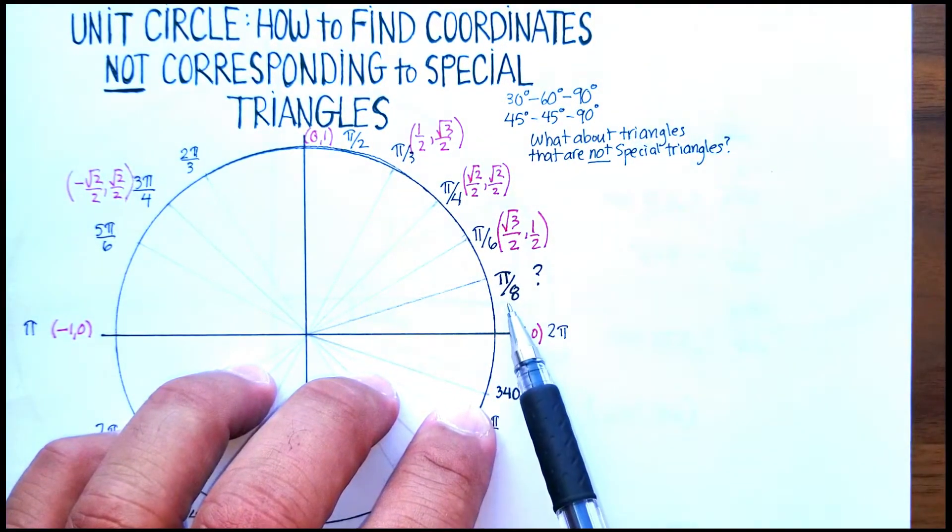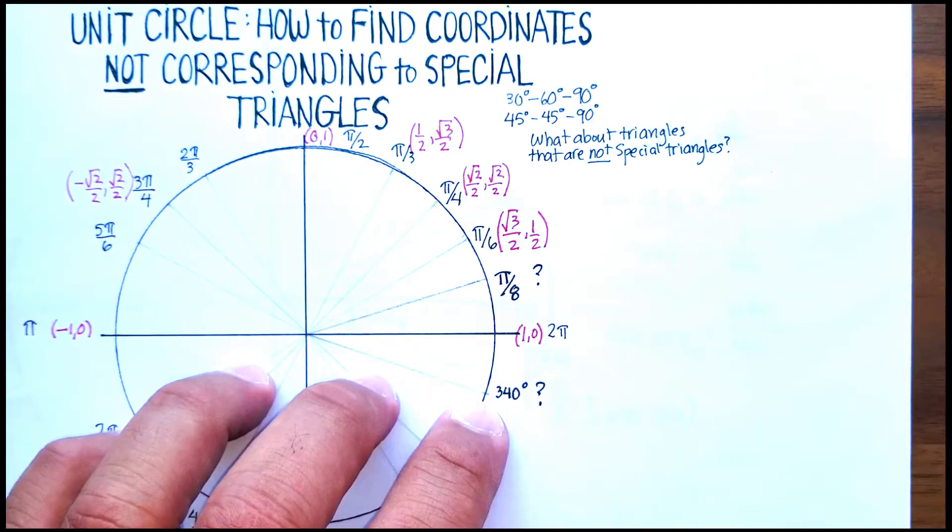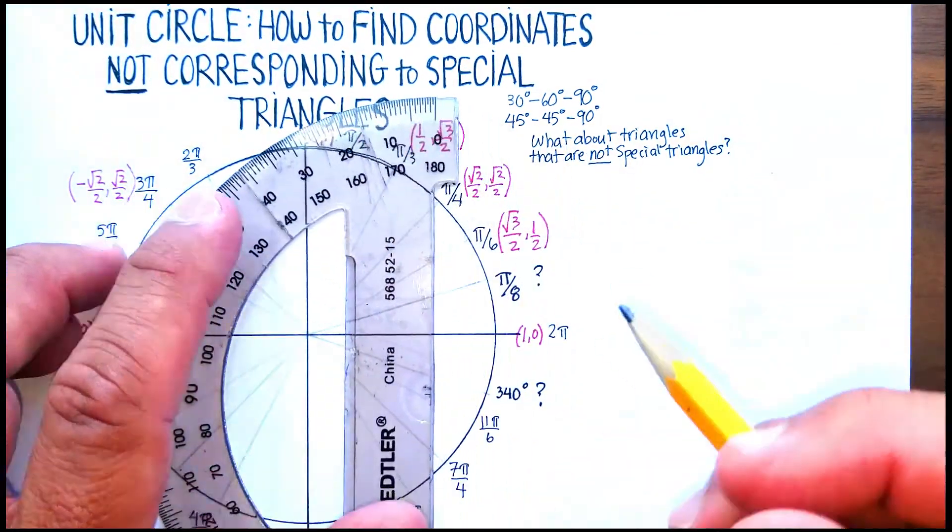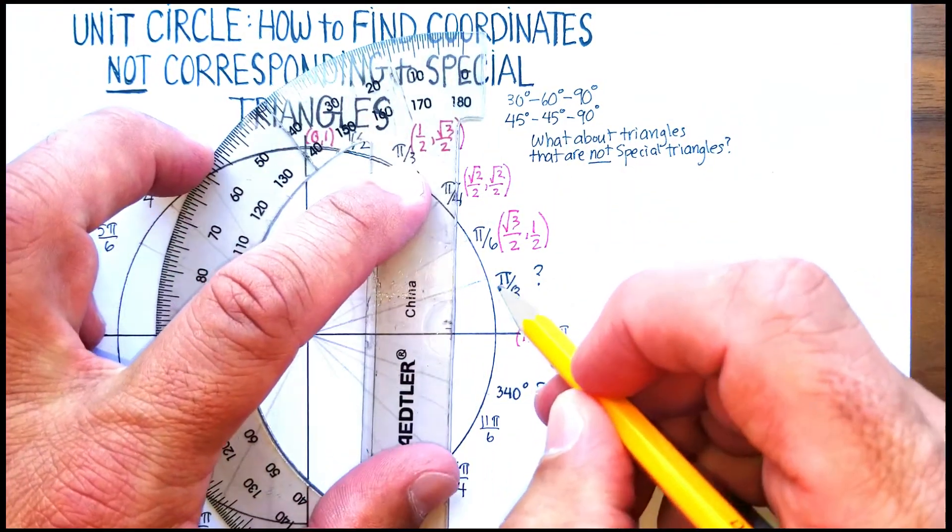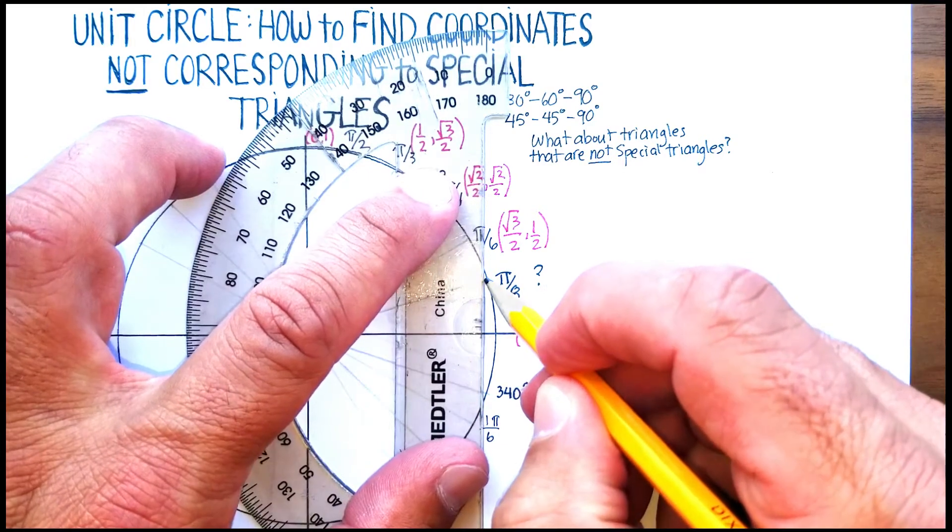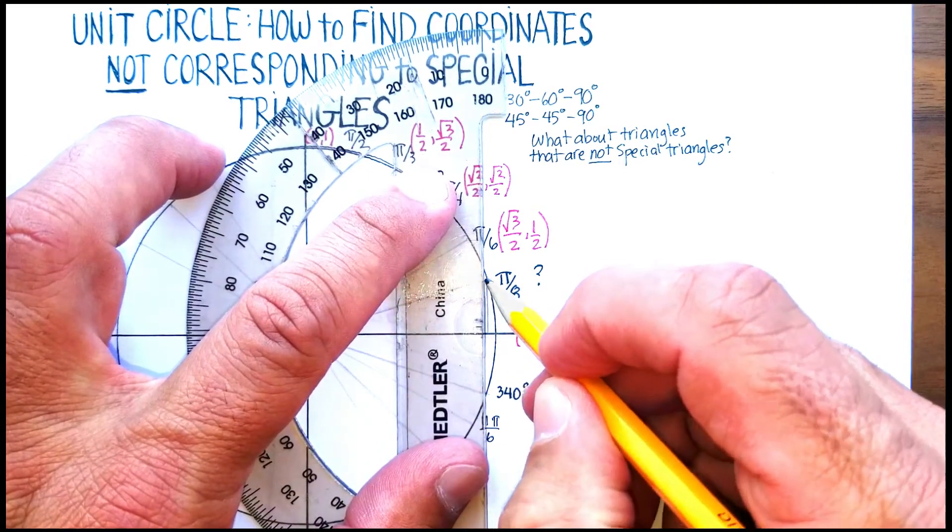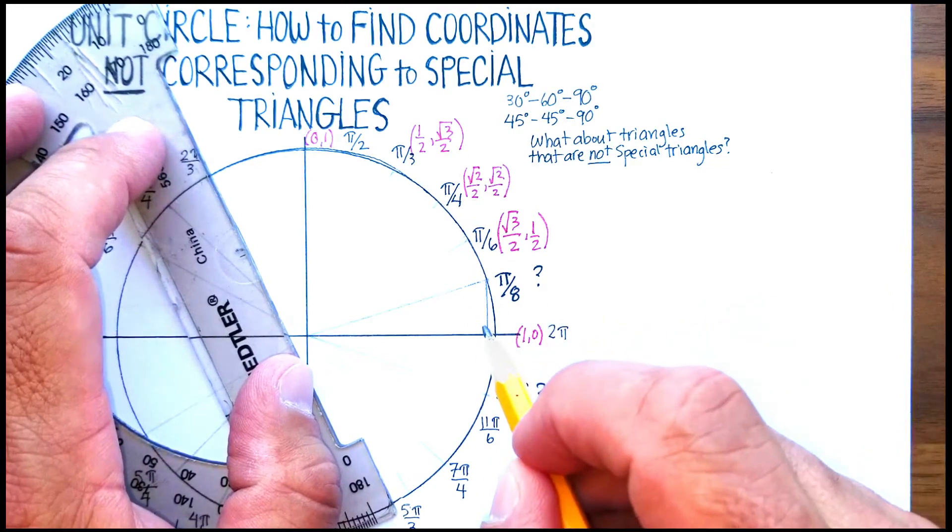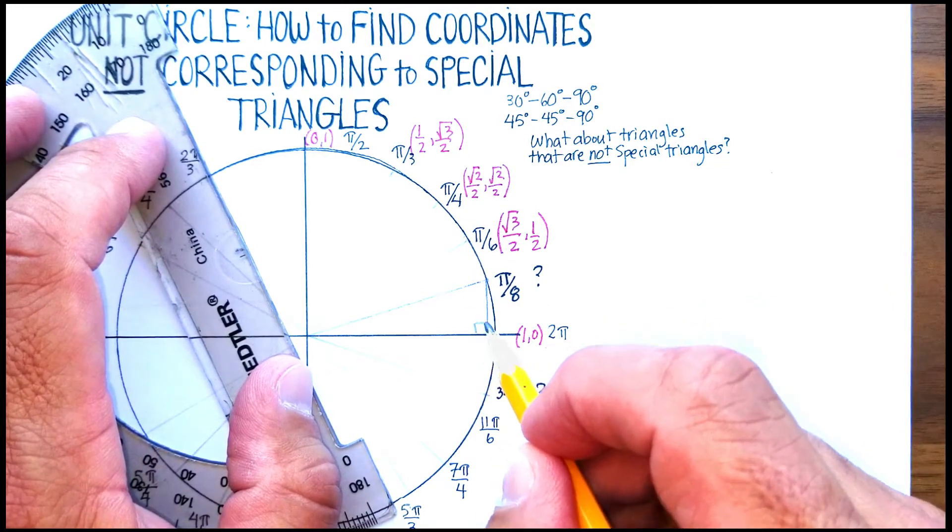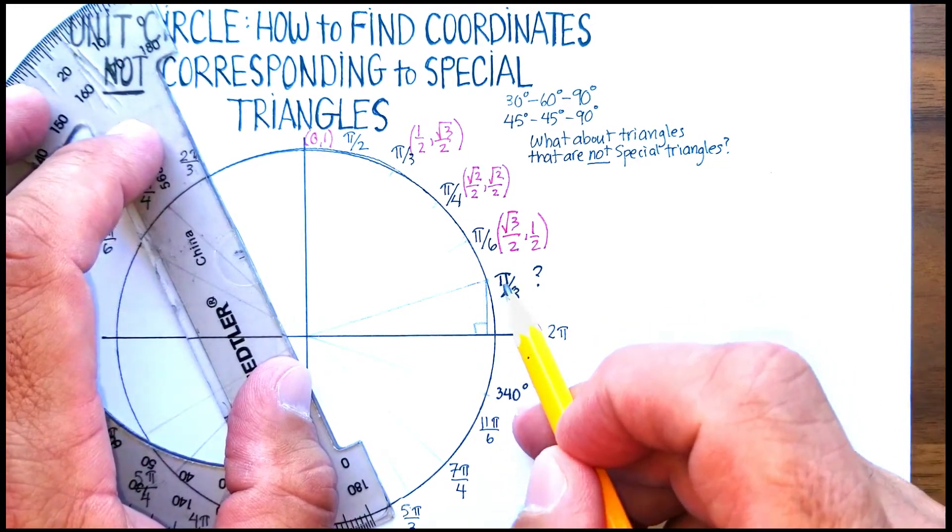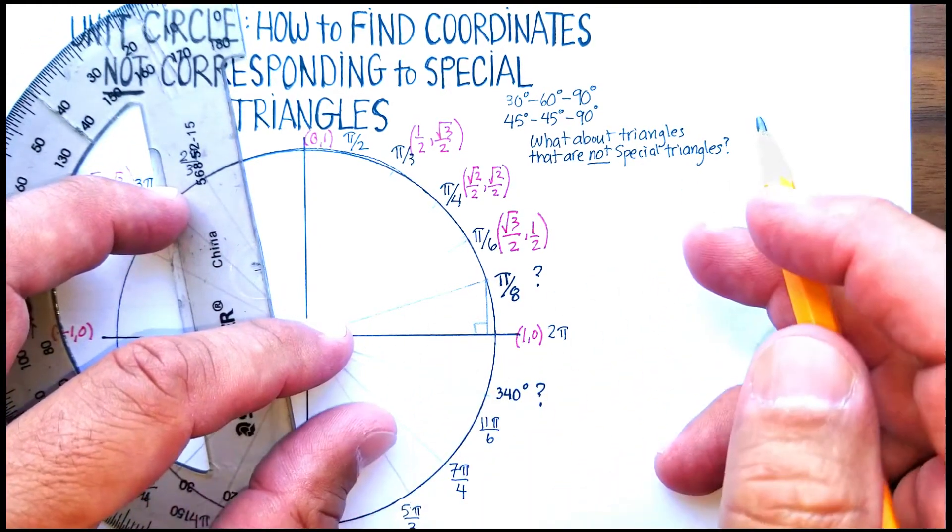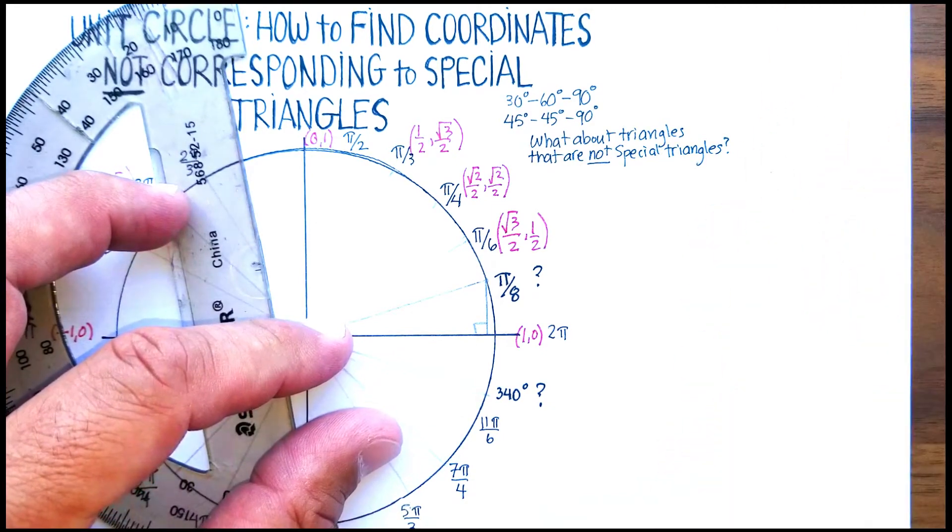Now let's start with π/8. The first thing that we're going to have to do is actually create the triangle that is formed there. So let's go to π/8, let's bring the leg down here. Now again, we have a right triangle, but we don't know how many degrees there are in this triangle. It's not a 30-60-90 or 45-45-90.